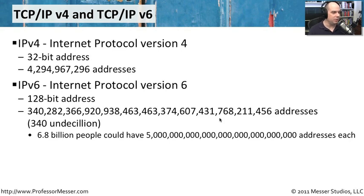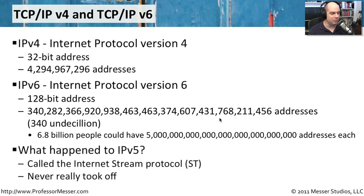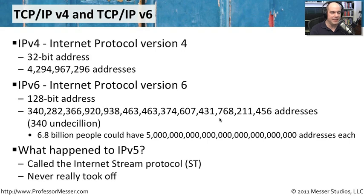You'll notice that we jumped from IPv4 directly to IPv6. That's because in the standards realm, there was something called IPv5 — the Internet Stream Protocol, or ST. It never really took off, but because that version number was taken, we couldn't reuse it. So IPv6 was the next step, and that's why you see that jump between version 4 and version 6.